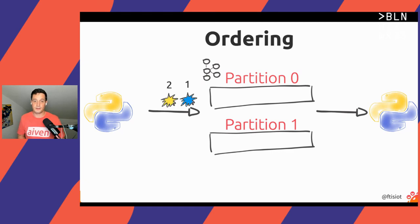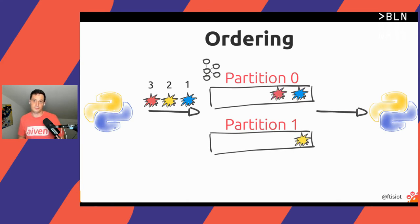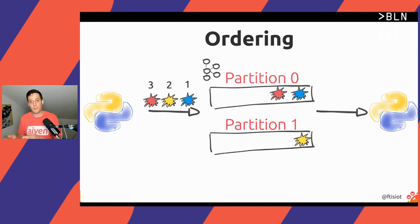When pushing those events to Kafka, the blue event will land on partition zero, the yellow event on partition one, and the red event on partition zero again. When reading from Kafka, it could happen — not always — that we will read the events in this sequence: blue event first, red event second, yellow event third.